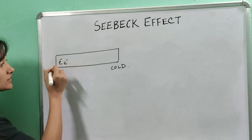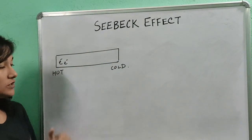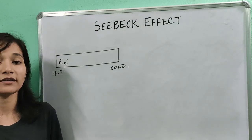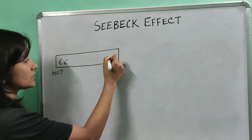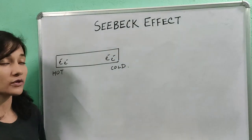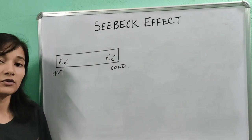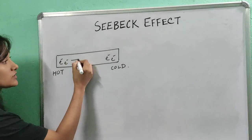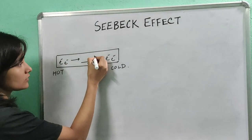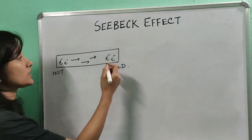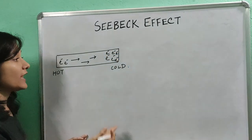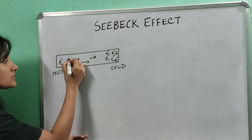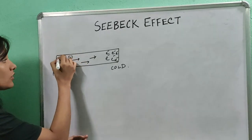Now the electrons in the hot end will possess greater velocities because they will have greater energy than the electrons in the cold region. Consequently, there will be a net diffusion of electrons from the hot region towards the cold region, which will result in accumulation of electrons in the cold region and leaving behind positive metal ions in the hot region.